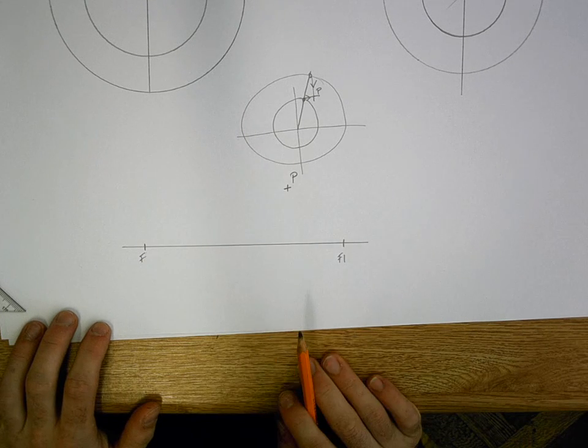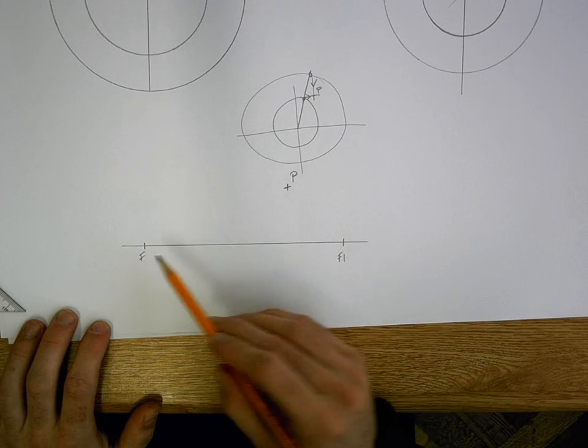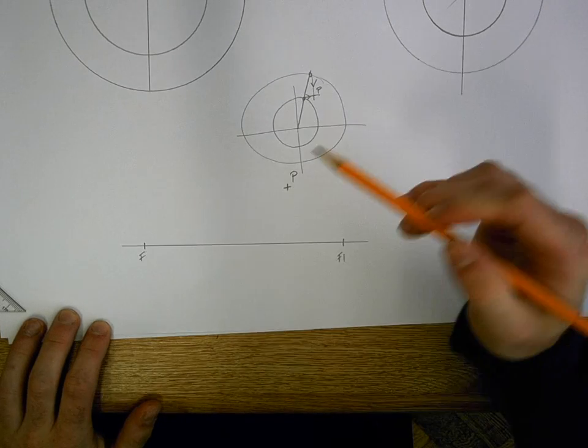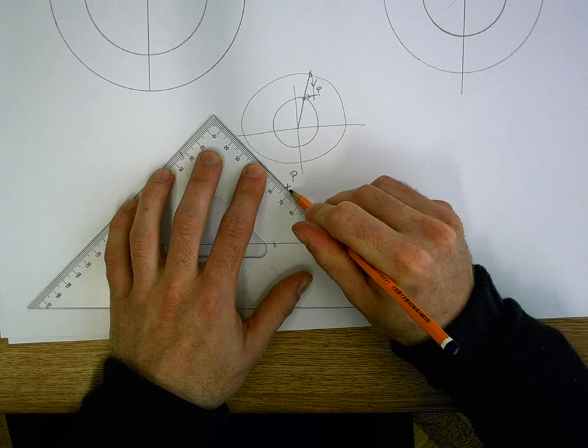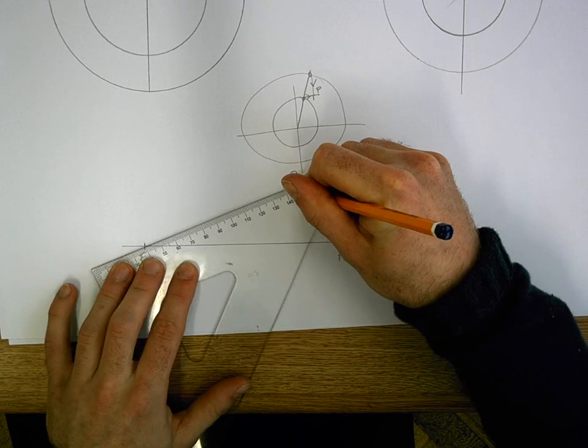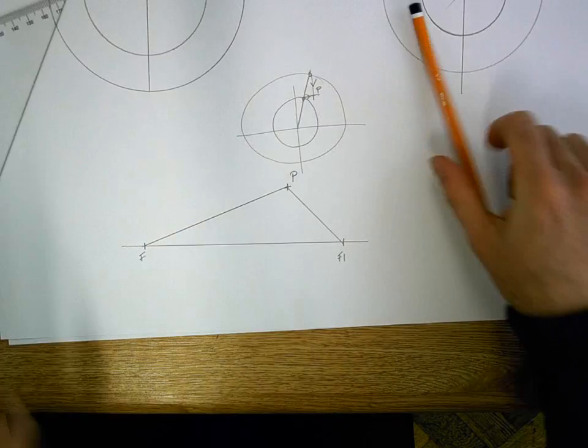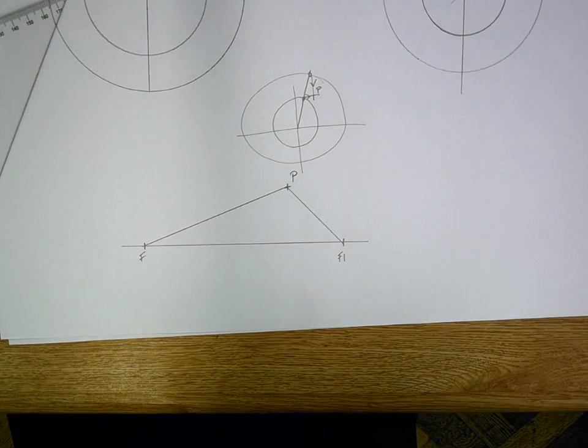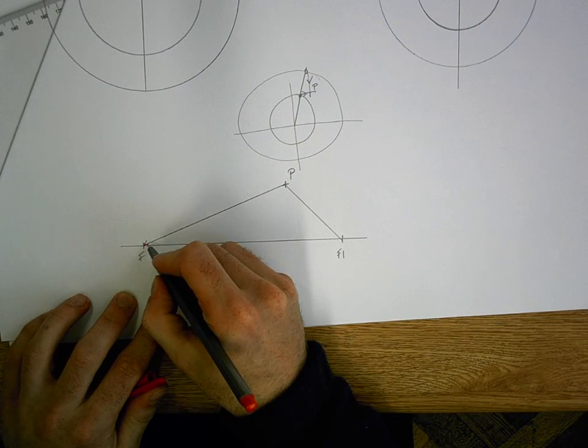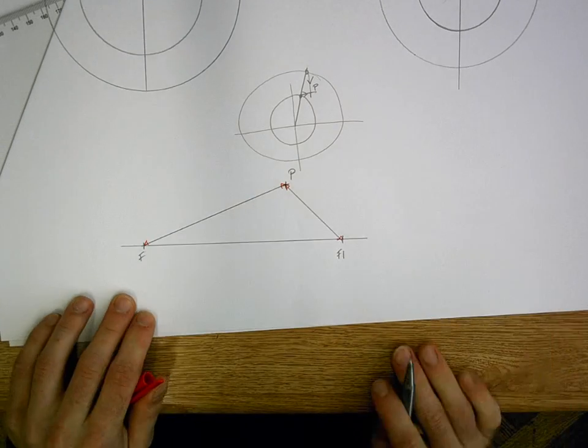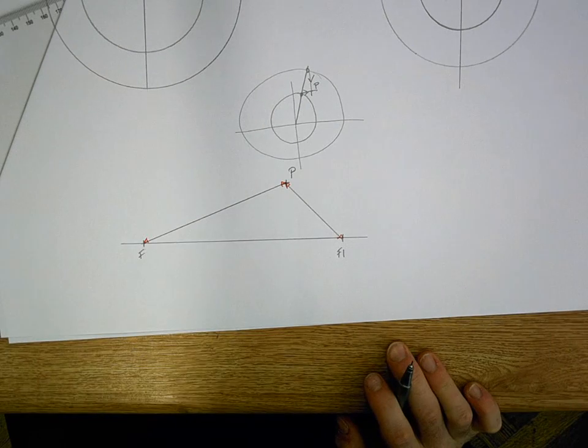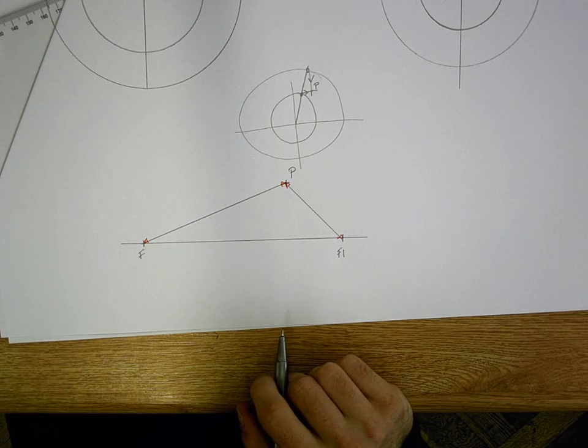Now there is a rule with an ellipse. If you have both of your focal points and you have a point on your curve, if you join those together, so you join F1 and F2 to point P, the combined distance of those lines, so if you took this distance and then added on this one, it's going to add up to your major axis. That's just a rule you have to learn off.